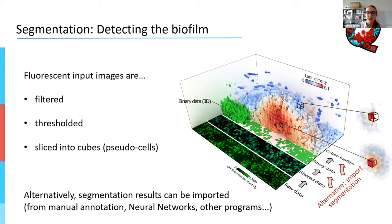Of course, we know that other people might already have great segmentation tools. Some people might have single-cell resolution. So we also included the possibility to import already pre-segmented data into BiofilmQ. Maybe you have a neural network that works well for your data, or maybe you've used another program. You don't need the segmentation step — you can import pre-segmented images and go straight to the analysis part.